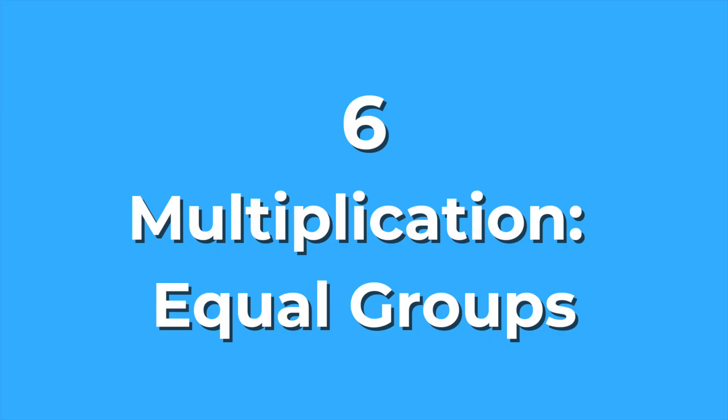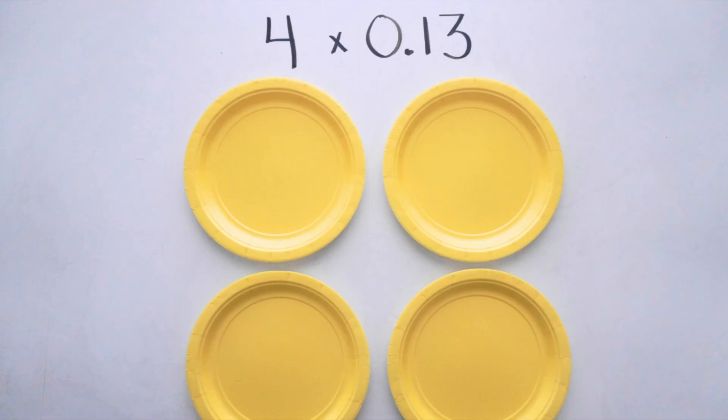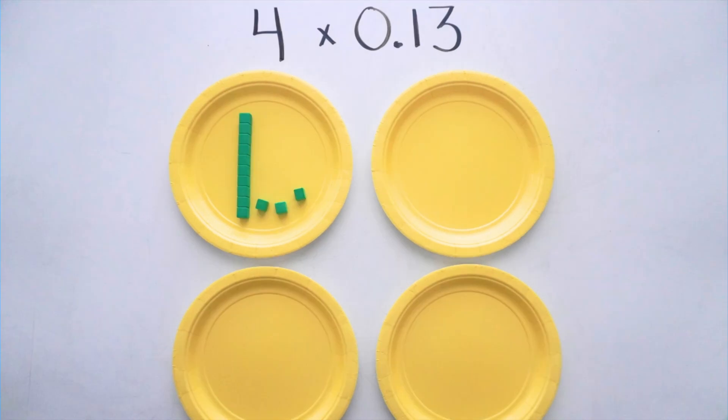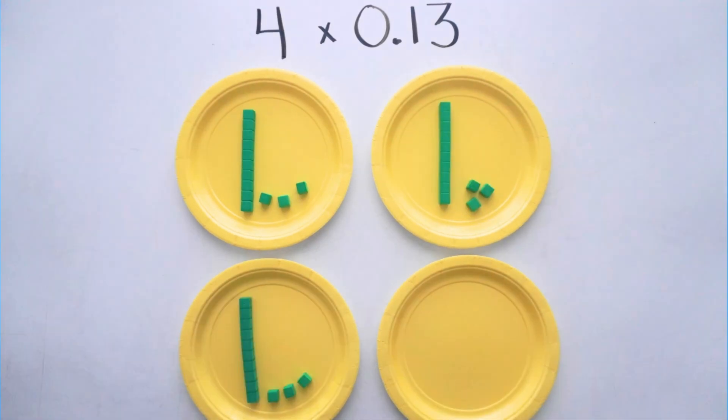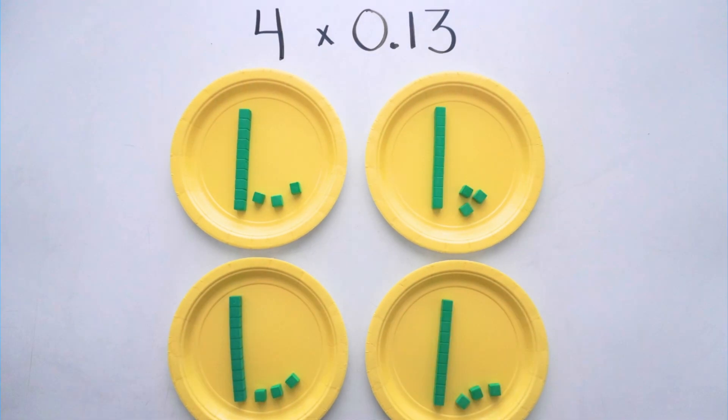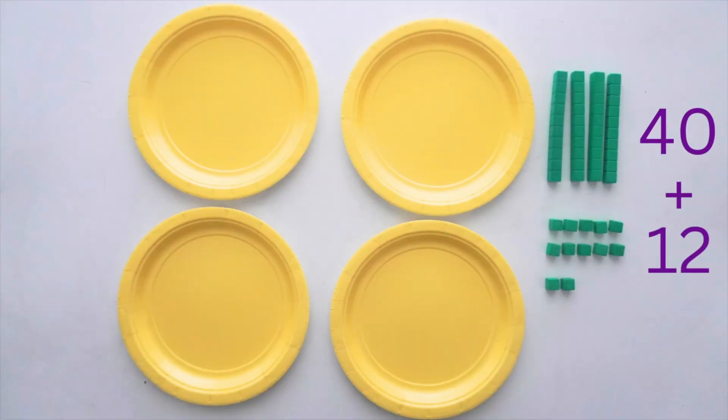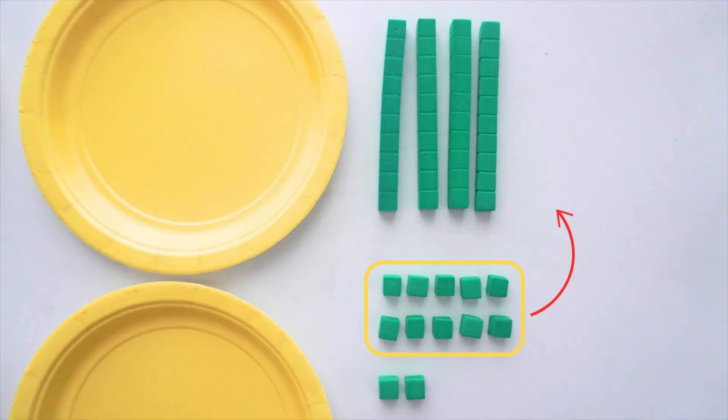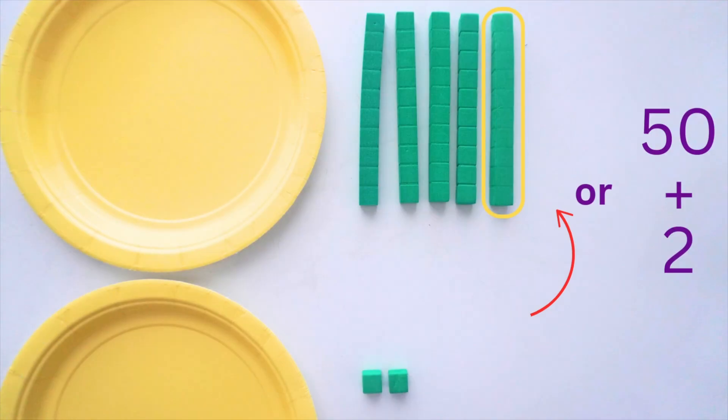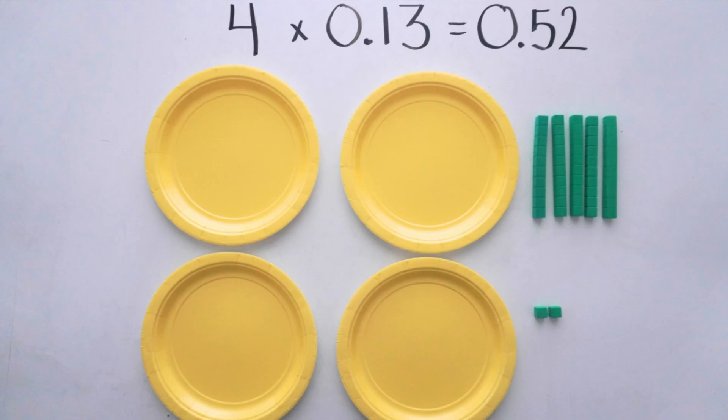Number six, multiplication with equal groups. Students can use units, rods, or a combination of both to build equal groups. They can use strategies they already know such as repeated addition or skip counting to find the total product. Experiences like this give them a clearer picture of what multiplication really means.